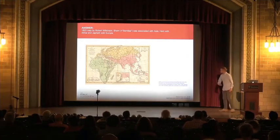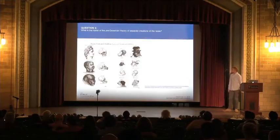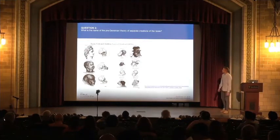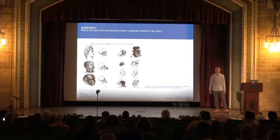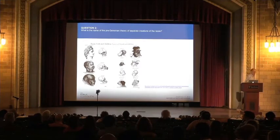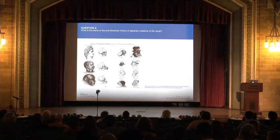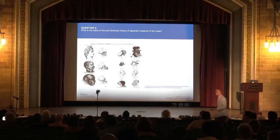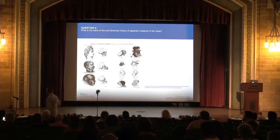Next question: What is the name of the pre-Darwinian theory of the separate creation of the races? Polygenesis — or polygenism. Absolutely. This one's perhaps a little bit more obscure, but pretty good audience.